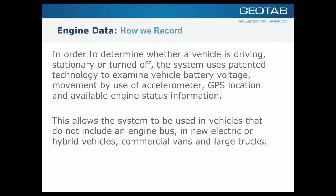Moving on to engine diagnostics. In order to determine whether a vehicle is driving, stationary, or turned off, the system uses patented technology to examine vehicle battery voltage, movement via accelerometer, GPS location, and available engine status information. Because the device plugs directly into the engine diagnostics port, we can determine battery voltage and, in two-wire mode where we're not reading ignition information, we can detect based on voltage and accelerometer movement if the vehicle has started moving.